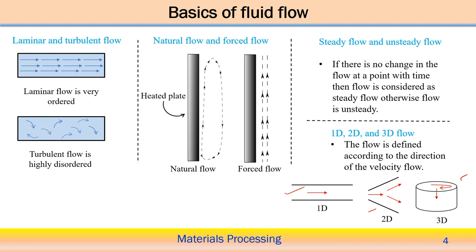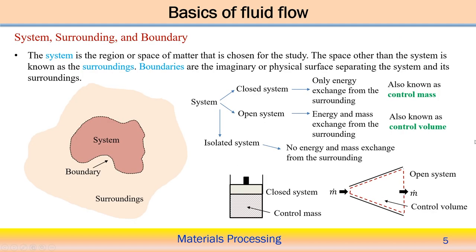You need to be able to distinguish the different variants of flow: steady state flow, unsteady flow, one-dimensional, two-dimensional, three-dimensional flow, natural flow, forced flow, laminar flow, and turbulent flow — all are useful for analysis. Now I come to the relevant basics of fluid flow: the system, surroundings, and the boundary, and how you can distinguish them and what role they play in defining the domain of analysis in material processing technology.